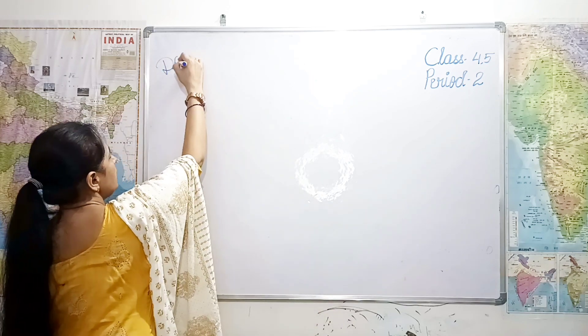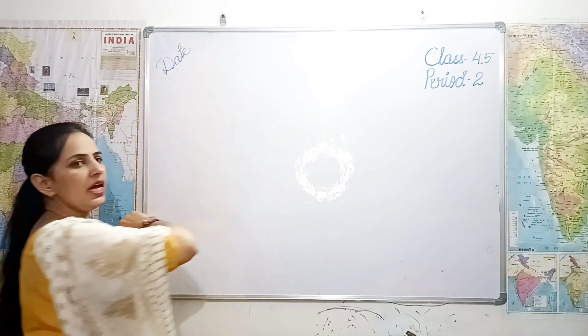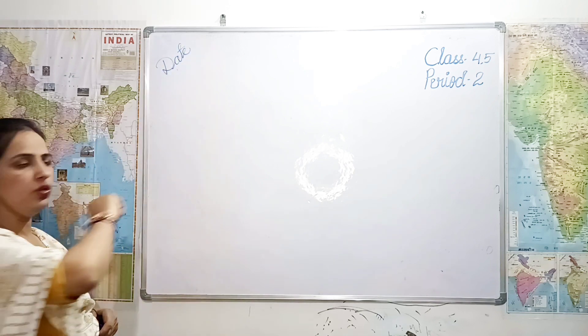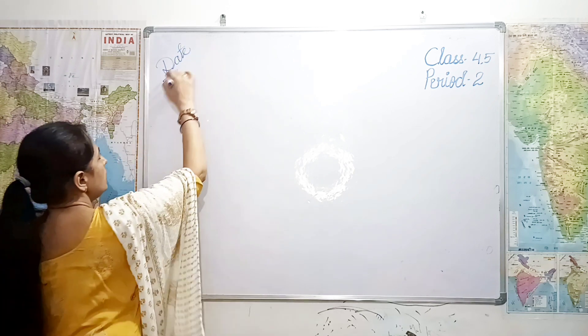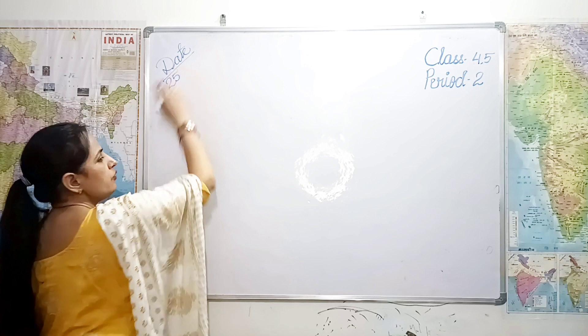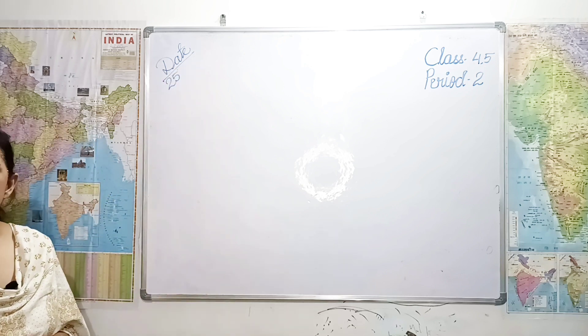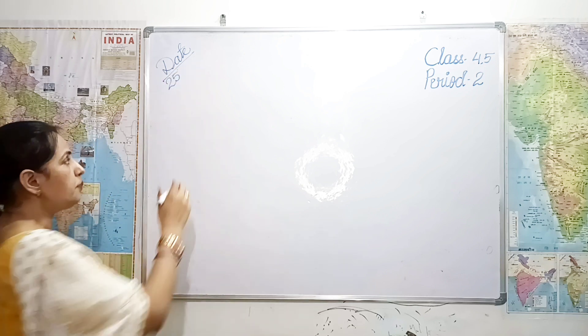Let me know what is the date today. Aaj kya tarikh hai bachho? It is 25. And which month is going on? It is September.